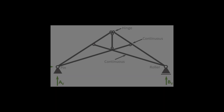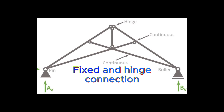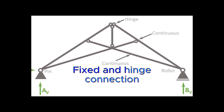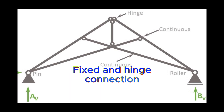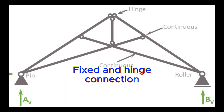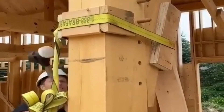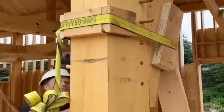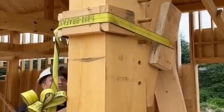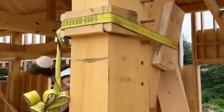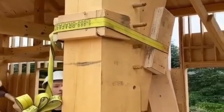The most realistic static system is actually a mix of fixed and hinge connections. This is because usually the rafters and bottom cords are delivered in one piece, meaning they are constructed continuously and the post is attached to them. The rafters basically turn into a two-span continuous beam, which means the static system is no longer statically determinate.